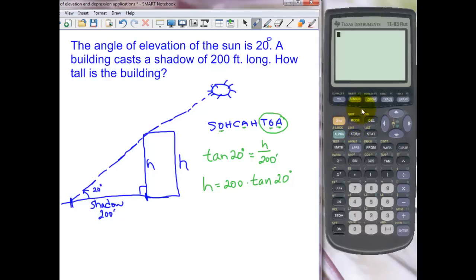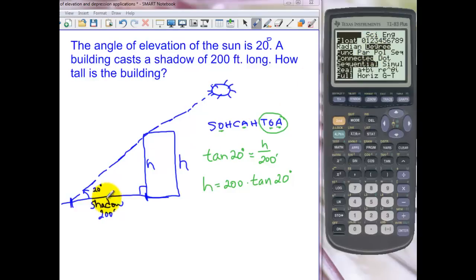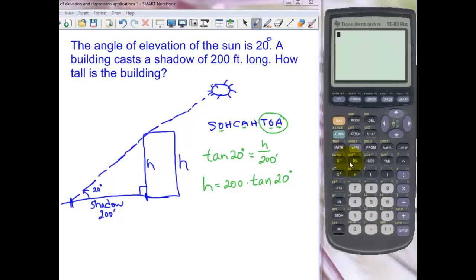Now remember, any time you start a new problem or you power up a new calculator on trig, we want to make sure we're in the right mode. And we're working in degrees here, so we want to make sure we're in degree mode. It's always worth double checking because if it's in that other mode, you're going to get different answers. So here's 200 times tan of 20. And we get 72.8 feet. So our building in this situation is 72.8 feet tall.